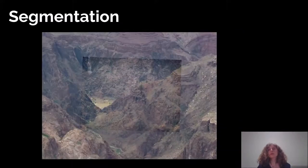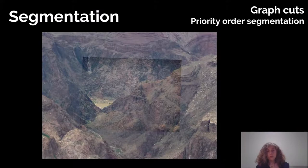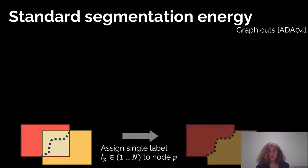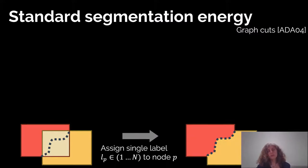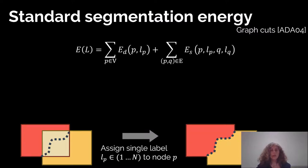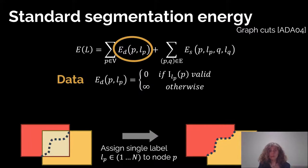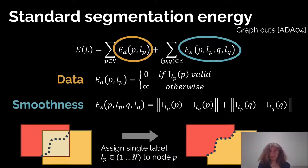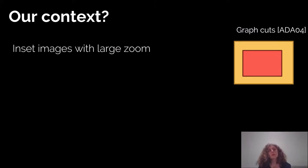This structure allows us to propose a stable resolution-preserving energy for multi-resolution graph cut segmentation. We want to compute a mask that allows a nice transition between images. Going back to the standard segmentation energy, we assign labels to each node with an energy composed of two terms: a data term that tells you if assigning pixel P to a given image is valid (zero if valid, infinite otherwise, meaning the pixel doesn't exist in that image), and a smoothness term that minimizes the transition between images by minimizing pixel value changes between images.